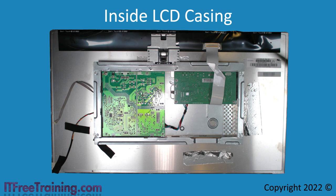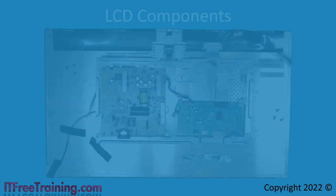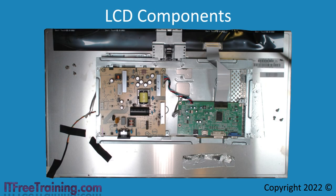Once you remove this casing, you will be able to see the components inside. In this LCD monitor, the components are divided up into two boards. The left board is the power transformer and powers the backlight. The right board is the logic board which would also contain the analog-to-digital converter. So essentially, for this monitor there are three basic parts: the screen, the logic board, and the power board — all connected to each other by cables.